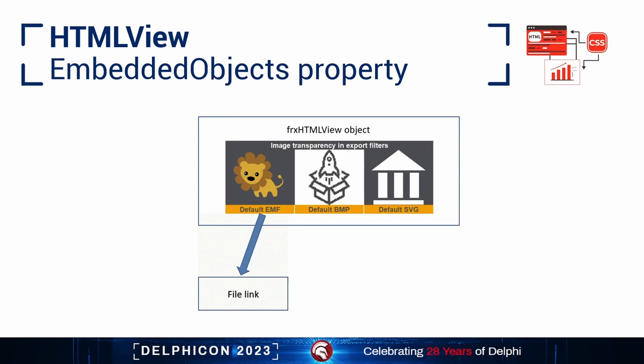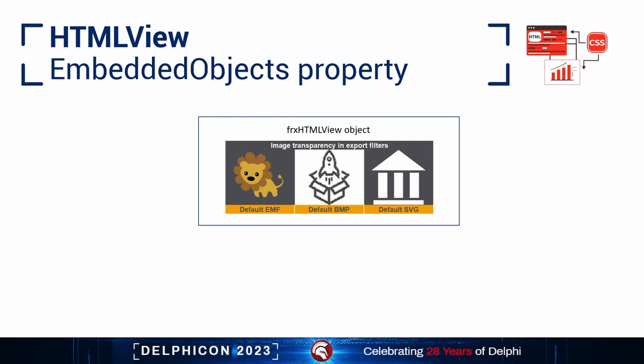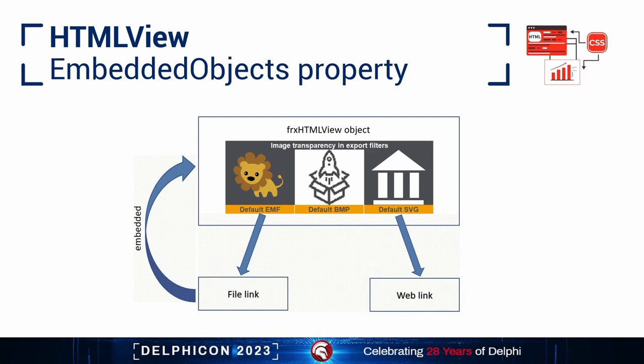The object for displaying HTML in the report, tfrxHTMLView, has the ability to cache and save images obtained from external links — file or web protocol. They will be sent directly to the constructed report via the embedded objects property. This increases the independence and speeds up the loading speed of such reports.